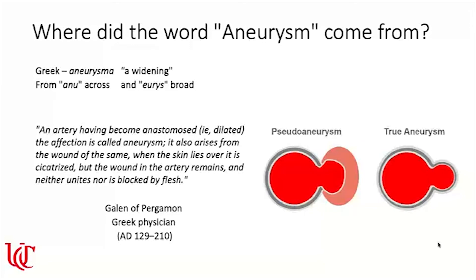Where did the word aneurysm come from? It originates in the Greek for 'a widening,' from the stems 'anu' meaning across and 'uris' meaning broad. The Greek physician Galen in the second century described an artery having become dilated: 'The affection is called an aneurysm. It also arises from the wound of the same. When the skin lies over it is cicatrised or cut, but the wound in the artery remains and neither unites nor is blocked by flesh.'